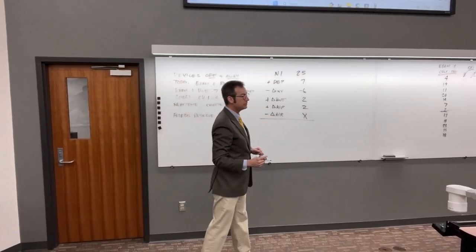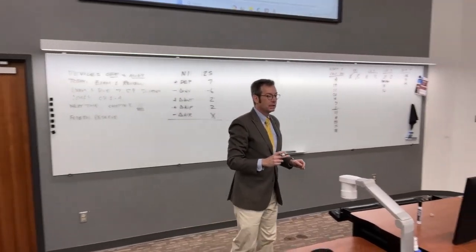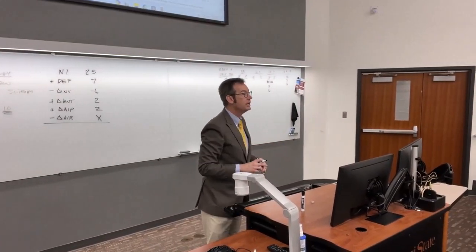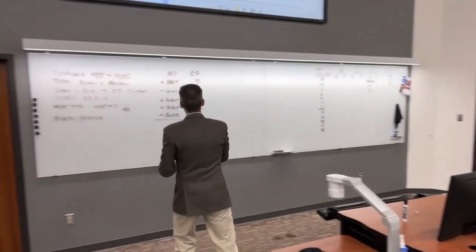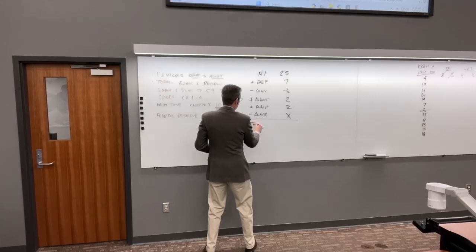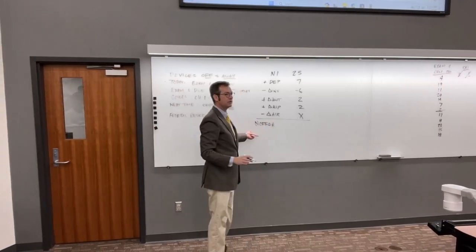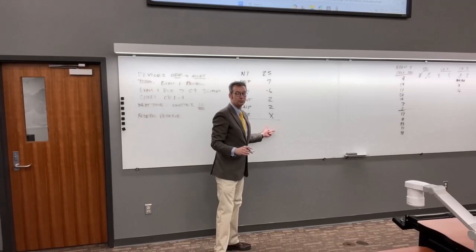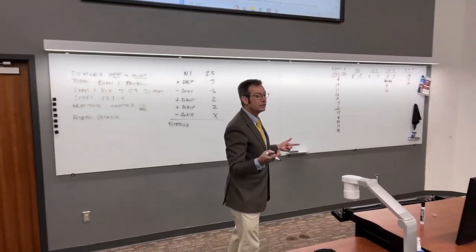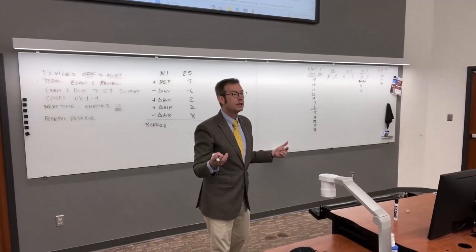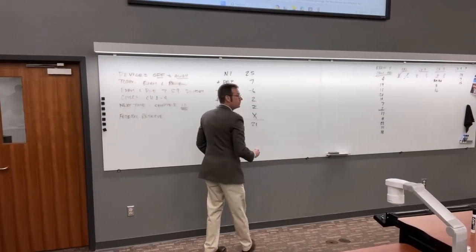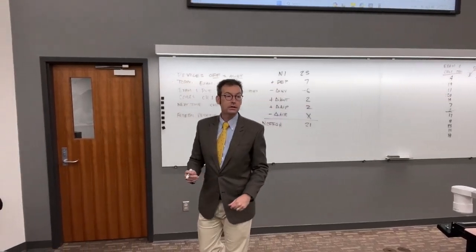Adding it all together gives us net cash flows from operating activities, which equals $21 million — the first number they gave us. A lot of students want to jump right on that number, but we didn't need it until the very end.